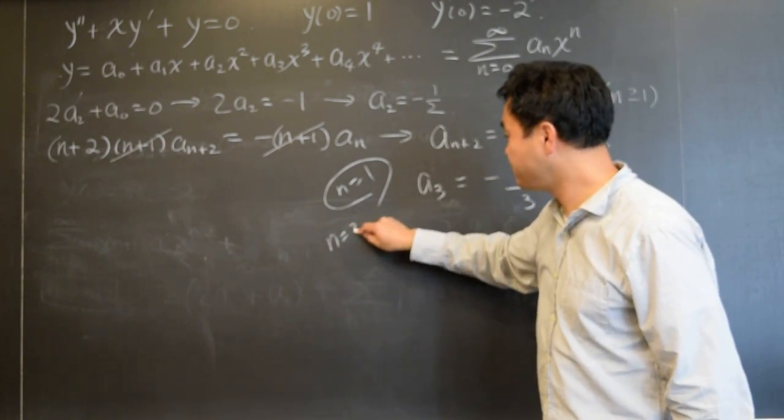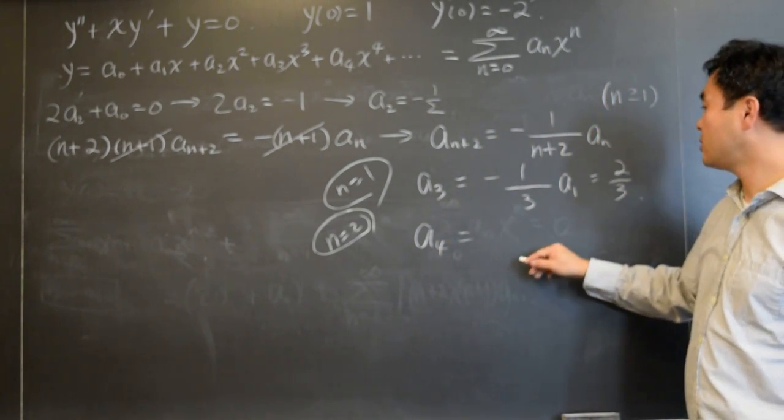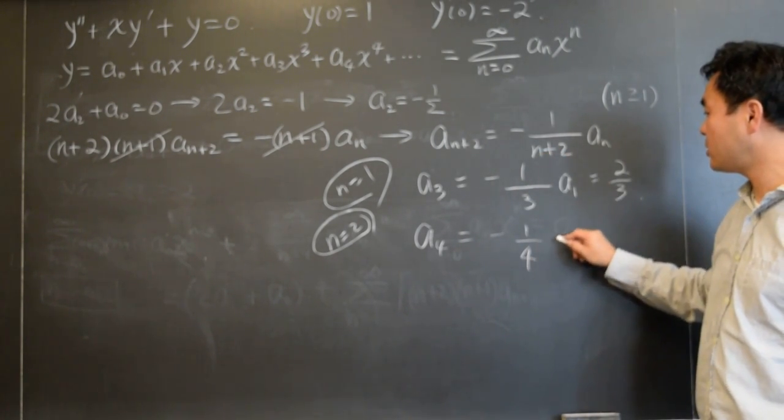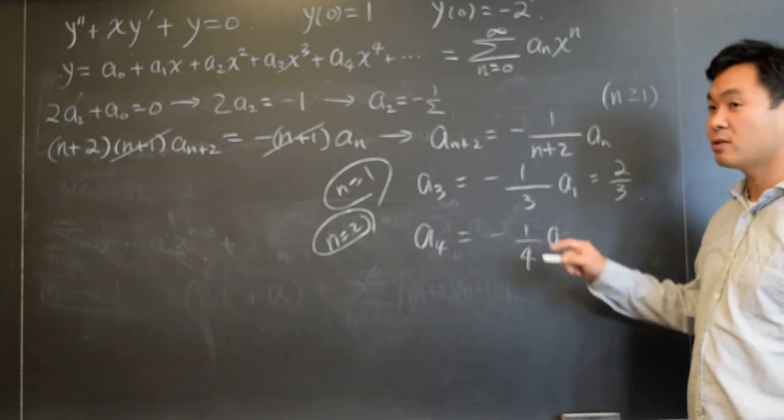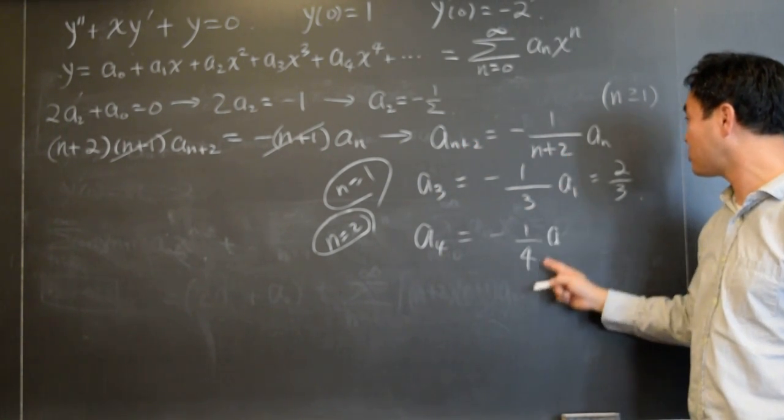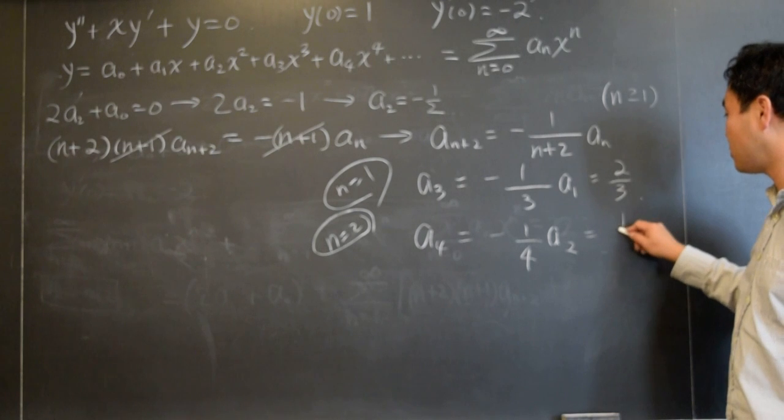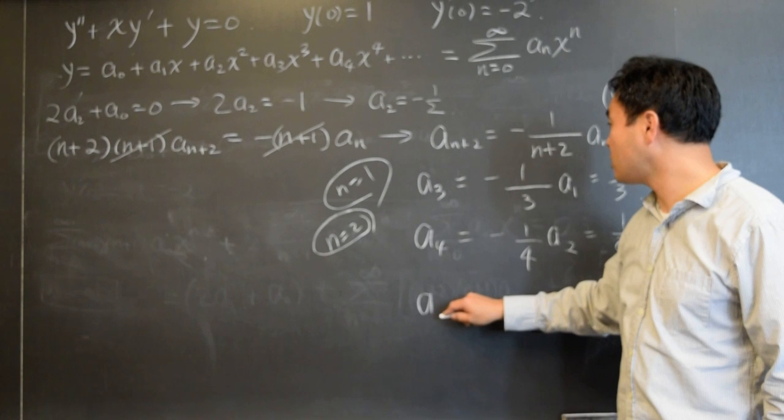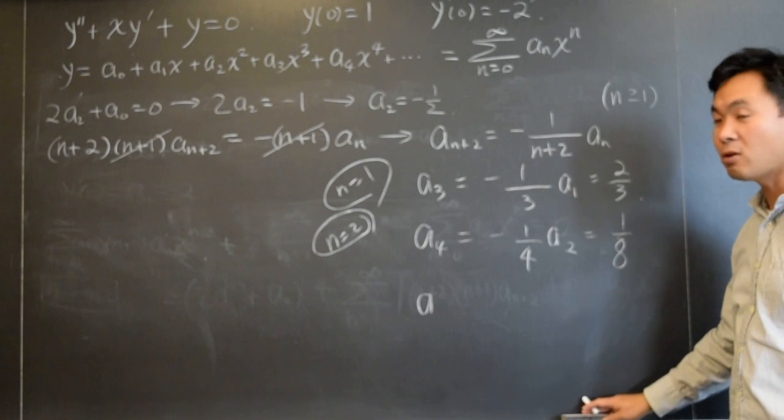n equals two. A four is negative one over two plus two, that's four, a two. A two, right? I'm saying n is two. So two plus two is four. Two plus two is four. Two. What's a two? We have it here, right? Negative one-half times negative one-fourth is one-eighth. And then that's already zero, one, two, three, four. Okay, that's already five terms. So originally we just agreed that we were just going to write down the first five terms.